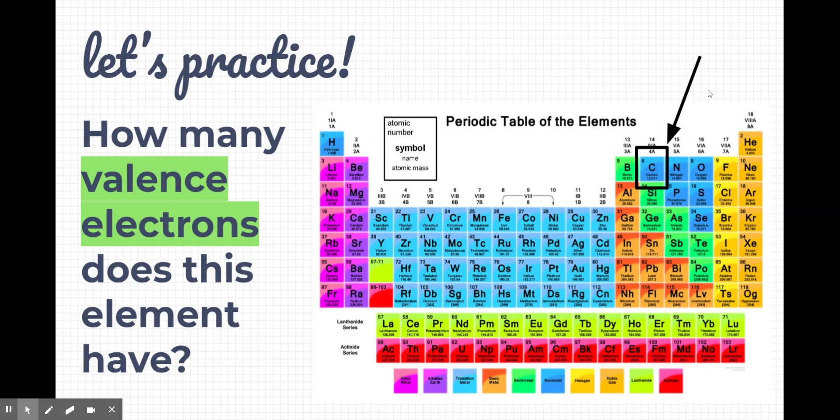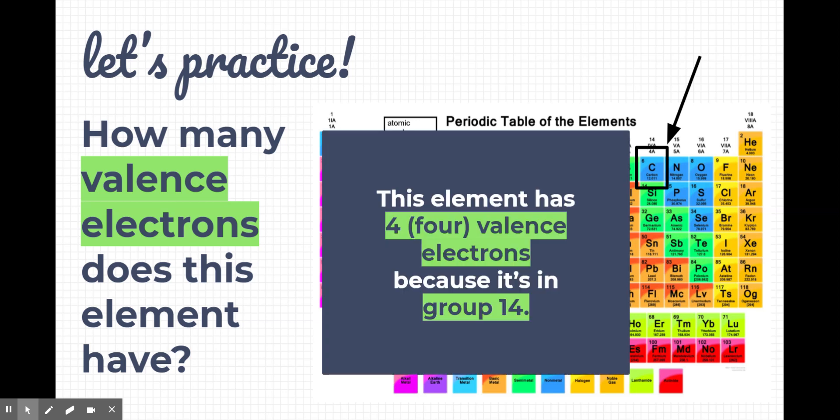So let's practice this. How many valence electrons does this atom, or this element, carbon, have? Carbon has four valence electrons because it's in group 14. That also means that everything in group 14, all the other elements, have only four valence electrons as well because they're all in the same group. So silicon, germanium, tin, lead, those all have four valence electrons too.